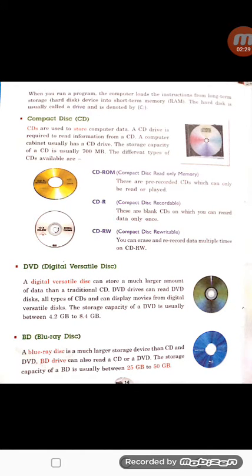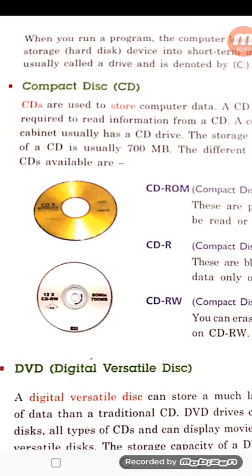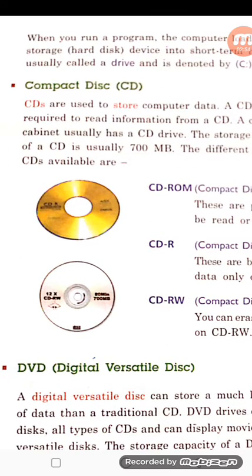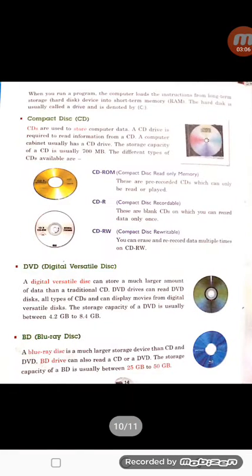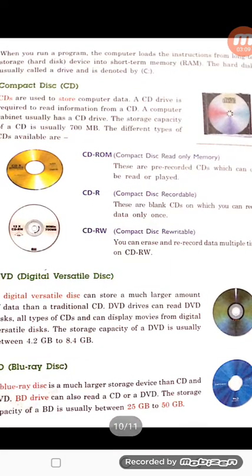After that, we differentiated between the three types of compact disks: compact disk read-only memory, recordable, and rewritable. We also differentiated CD, DVD, and Blu-ray disk. They are different from each other in terms of capacity. A CD can hold data up to 700 MB. A DVD can hold up to 4.2 GB to 8.4 GB. Whereas Blu-ray disk has the maximum among all three — it has 25 GB to 50 GB.